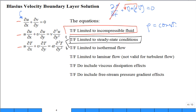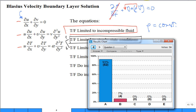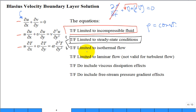True or false: these equations are limited to steady-state conditions. We are dealing with steady state, so that's true. Next question: are these equations, as written — continuity, linear momentum, energy — limited to isothermal flow? What would be the point of the third equation if temperature were constant? We're trying to solve for temperature throughout the domain, so the temperature is not constant — not limited to isothermal flow.